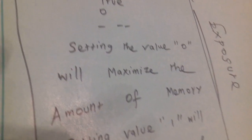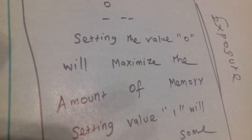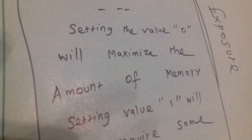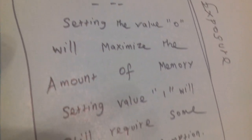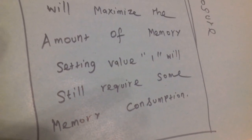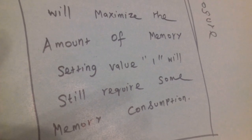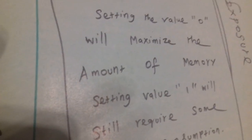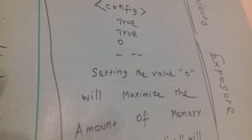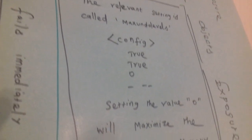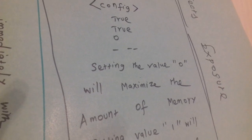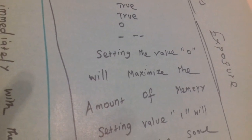Setting the value 0 will maximize the amount of memory consumption. When you set the value 1, it will still record some memory consumption. So when you make 0 in maximum level settings, it will release or maximize the amount of memory.